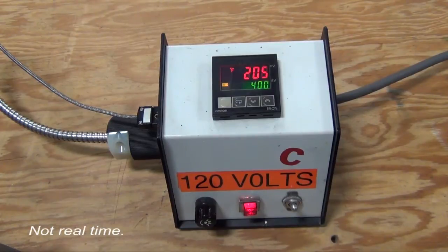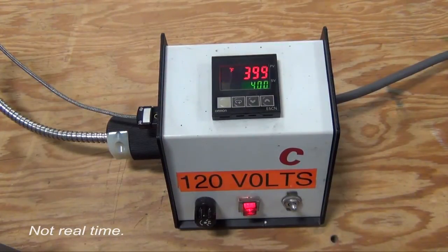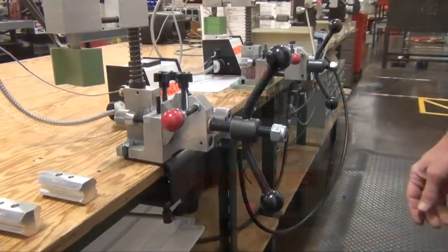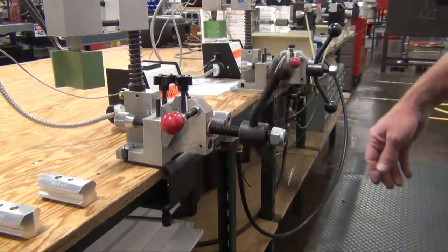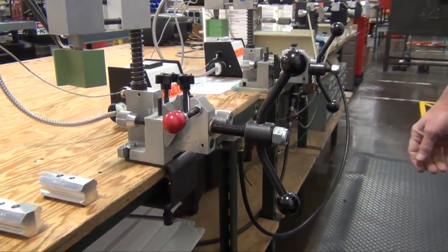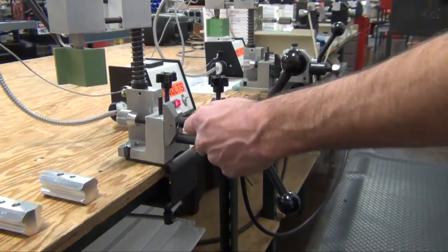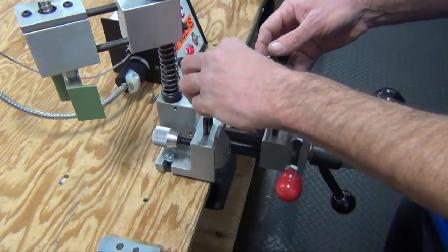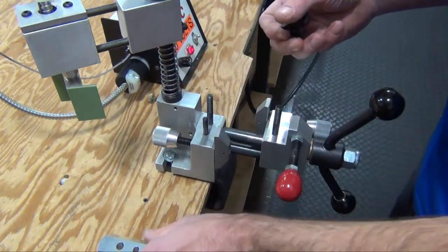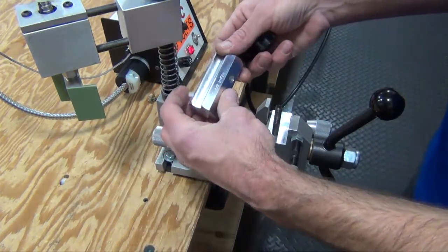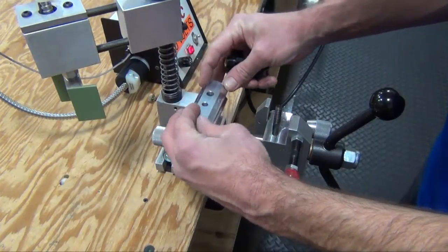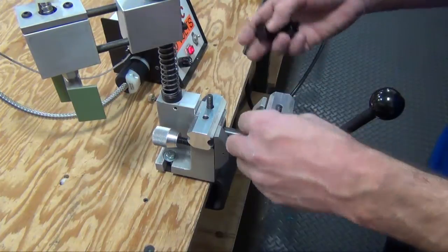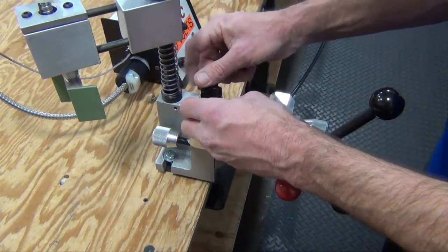Turn large wing nut several turns counterclockwise until it stops. Pull back on red knob on front sliding die. Remove black star-shaped thumb nuts from welder.